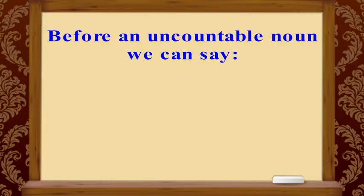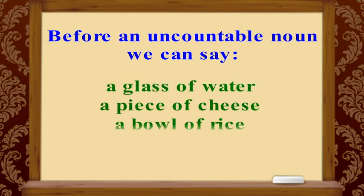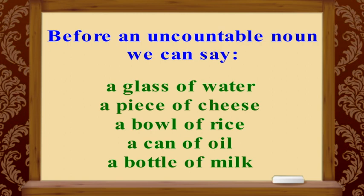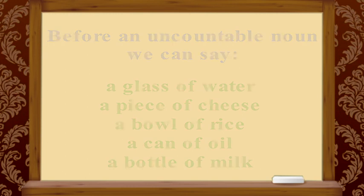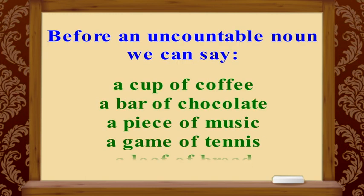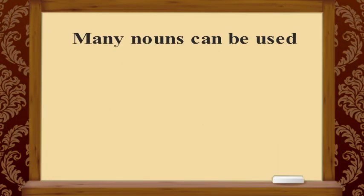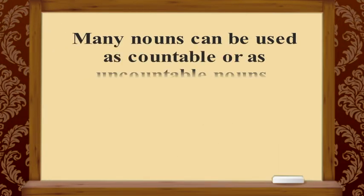Before an uncountable noun, we can use quantity expressions such as: a glass of water, a piece of cheese, a bowl of rice, a can of oil, a bottle of milk, a cup of coffee, a bar of chocolate, a piece of music, a game of tennis, a loaf of bread.